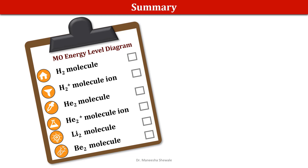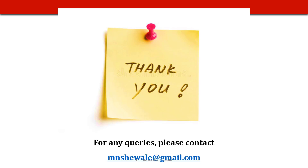In this video we have studied about the energy level diagrams for the hydrogen molecule, then the H₂⁺ ion, then the helium molecule, then the He₂⁺ molecule ion, then two elements from the second row — lithium and beryllium. Thank you for watching the video, and for any queries please contact mngy@gmail.com. Thank you.